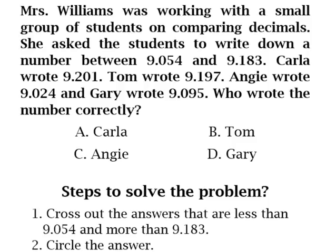So let's look at what numbers each student wrote. Carla wrote 9.201, okay, and we must look to see if that's in between 9.054 and 9.183. If it's not, Carla is out. Tom wrote 9.197. Again, we must see if 9.197 is greater than 9.054 but less than 9.183. Angie wrote 9.024. Is 9.024 greater than 9.054 and less than 9.183?